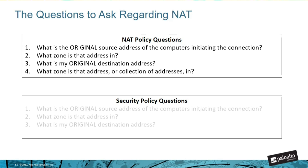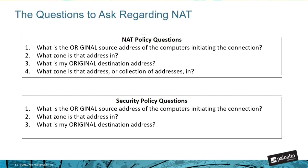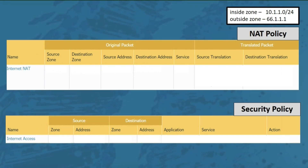The questions regarding the NAT policy and the security policy are identical, with the exception of the last question on the security policy. That would be question 4: what zone will the packet finally come to rest in? In this first example, we want to create simple NAT and security policy rules that will allow internet access for computers on the inside subnet.